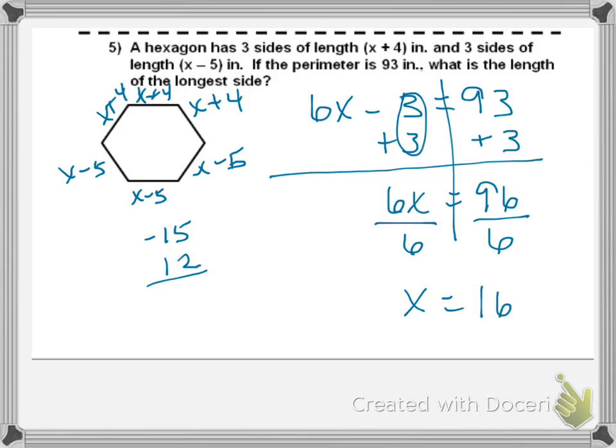So, three of my sides would be 16 plus 4, which is 20. And then three of my sides is 16 minus 5, which is 11. So, these might not be these exact sides, but you get the idea. So, the question is, what's my longest side? So, it would be 20 inches. And that's that for this video. See you next video. See you in class.